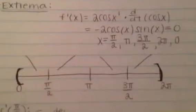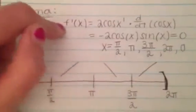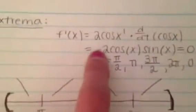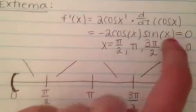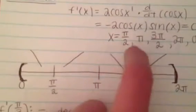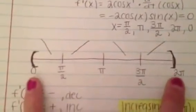Next, we find the extrema by taking the derivative of the function. Using the chain rule and bringing down the 2 from cosine squared, the derivative turns out to be negative 2 times cosine x times sine x. Setting that equal to 0, the critical x-values are 0, pi over 2, pi, 3 pi over 2, and 2 pi. The values 0 and 2 pi are the domain endpoints, already included, and the other three are our critical numbers.